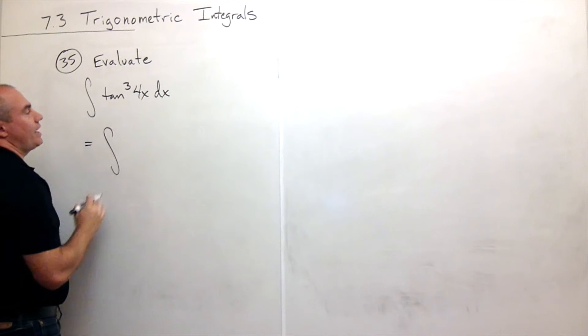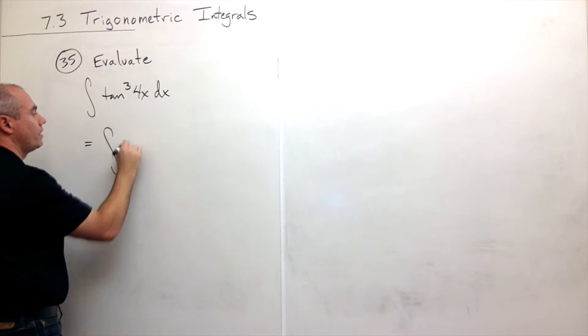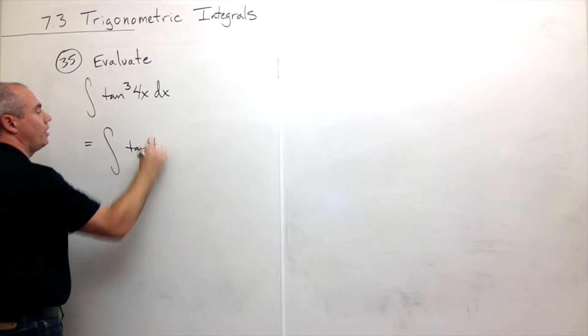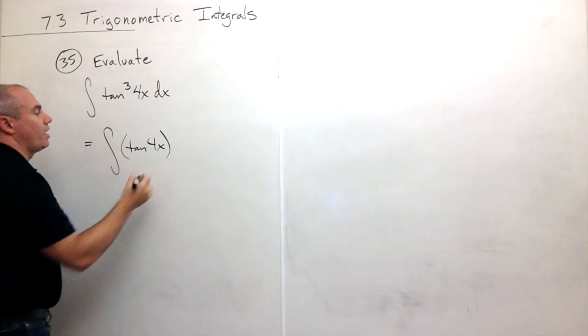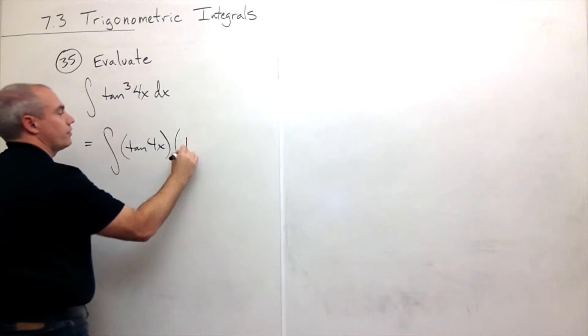let's take two of the tangents and separate them off. So I have a tangent of 4x and I'll write two of the tangents over here,